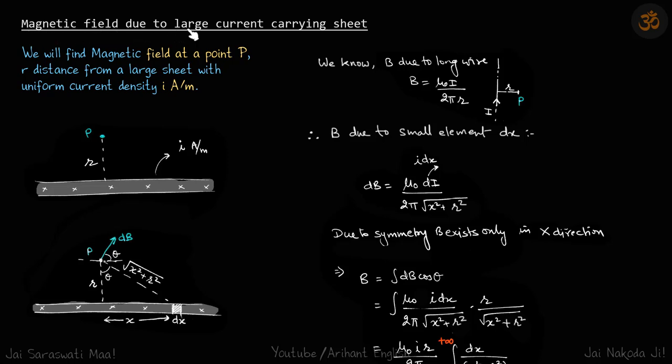Magnetic field due to large current carrying sheet. We are given this sheet and in its cross-section the current is going inside the plane. We are supposed to find the magnetic field at a point P which is at a distance R from the sheet. It is given that for this sheet the current density is I amperes per meter.